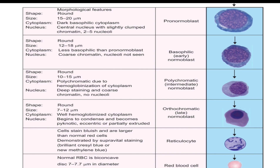This change in staining occurs mainly due to gradual reduction in the quantity of RNA material — RNA material is acidic, so it stains basic. Proerythroblasts are the first identifiable cells of the erythrocyte series. The cytoplasm is less in amount, occupying only about 20% of the cell. It has a high concentration of polyribosomes and high content of DNA, indicating vigorous protein synthesis. The nucleus is large and occupies about 80% of the cell, containing multiple nucleoli — about 2 to 5.